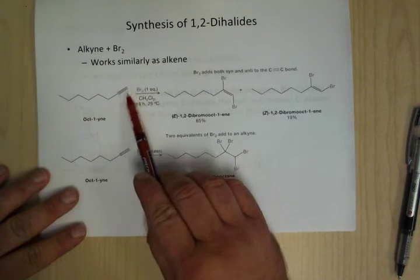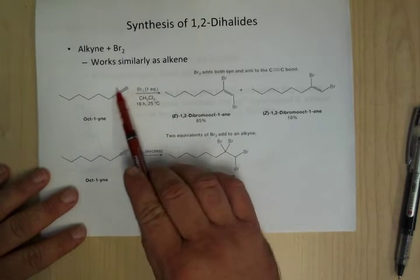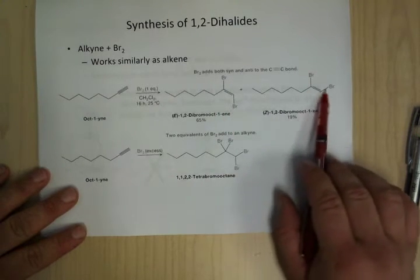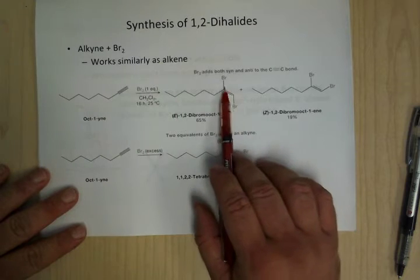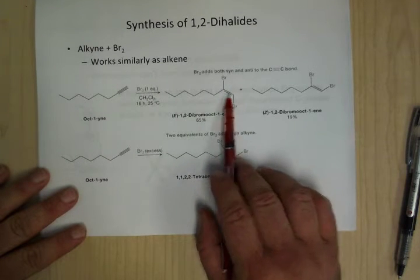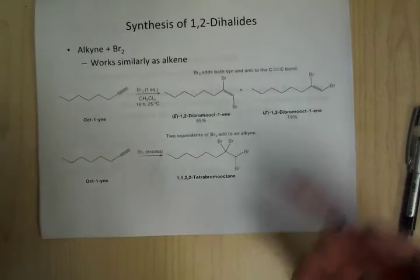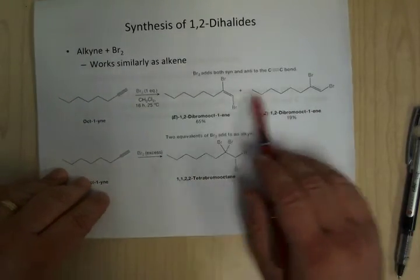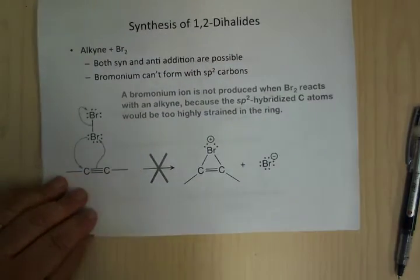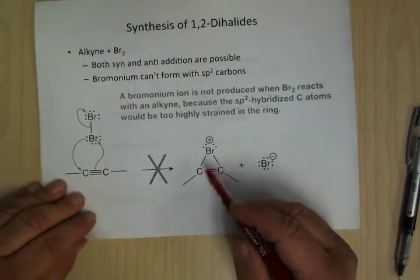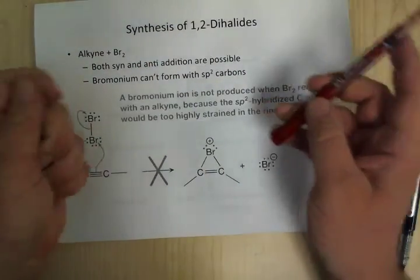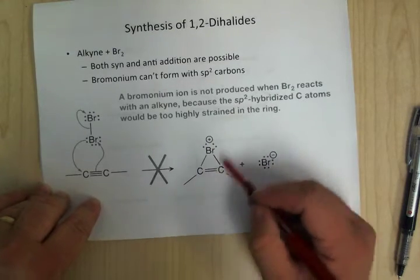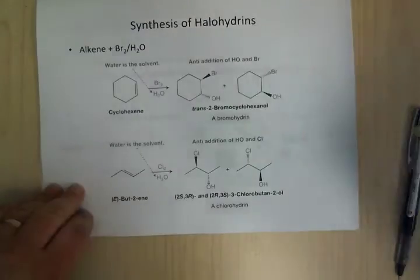With alkynes, it's going to act like two alkenes. You are going to get a mixture of cis and trans — usually it's going to be trans but you can get some cis. If you have one equivalent, you just put bromines on both sides. If you have excess bromine, the reaction happens twice, and more bromine comes in here and here. The reason you don't get quite the same selectivity is because you can't really go through the bromonium ion — there would be a tremendous amount of ring strain, so the bromonium probably doesn't form.